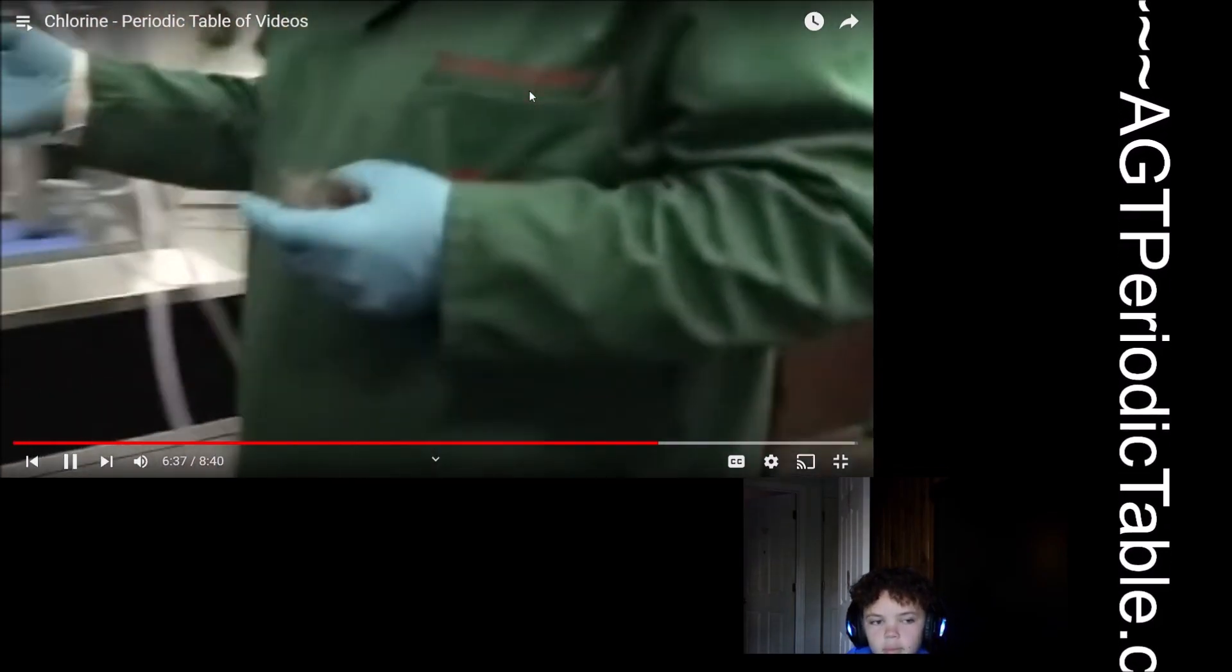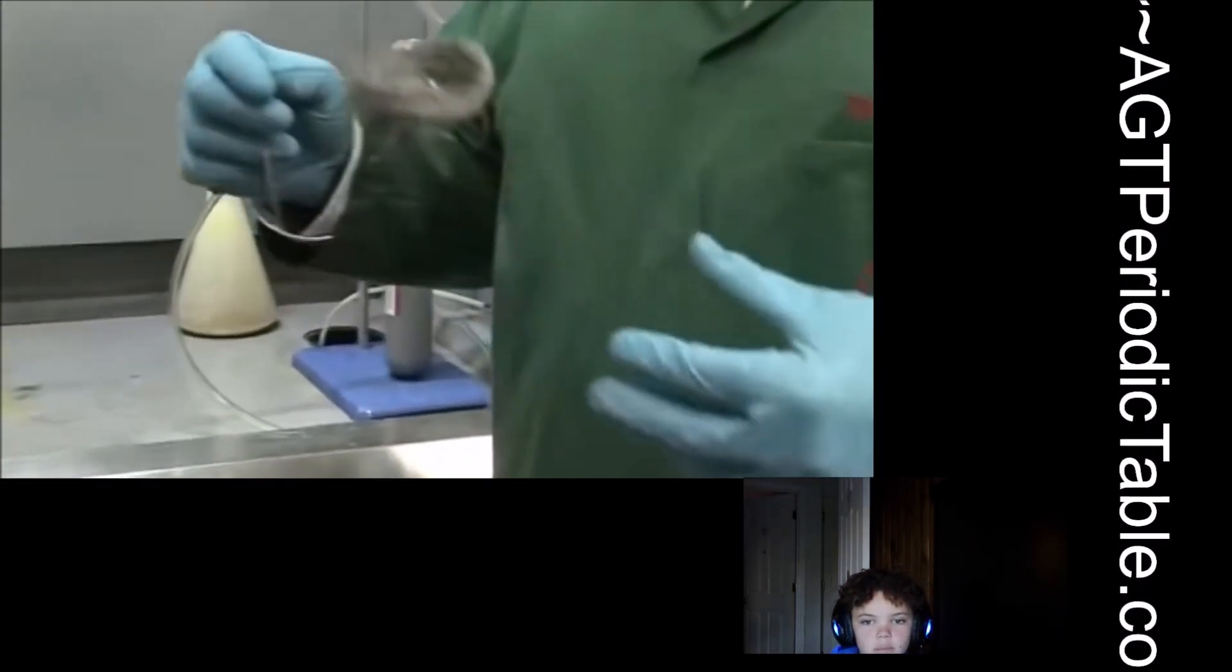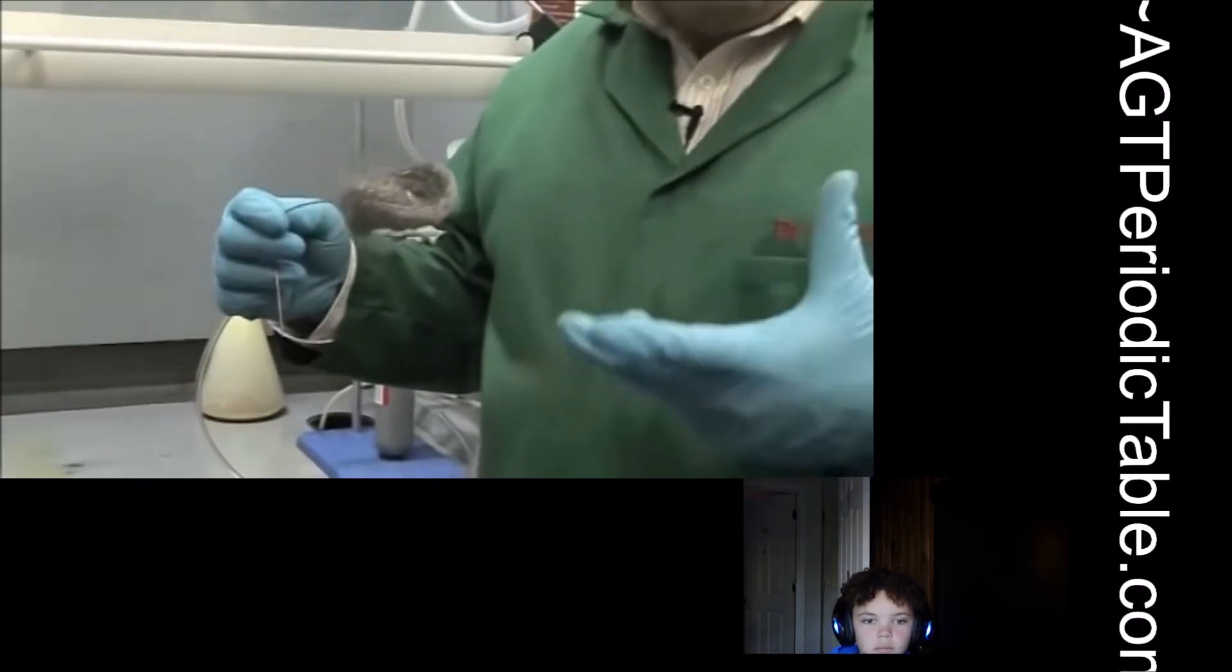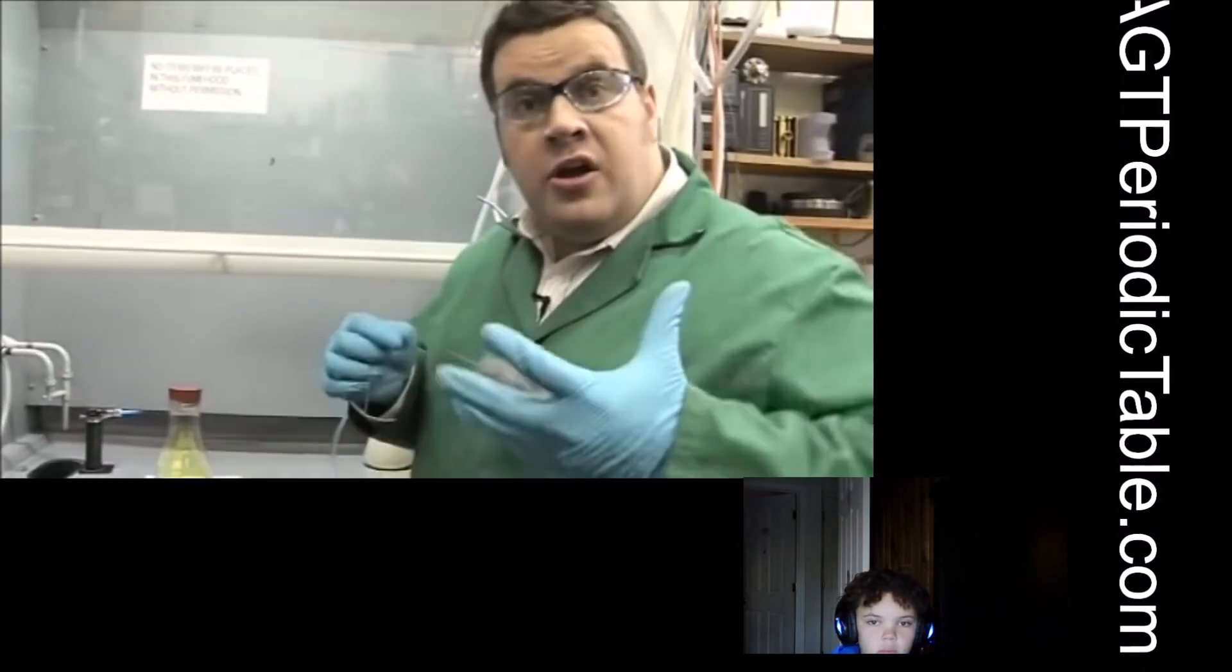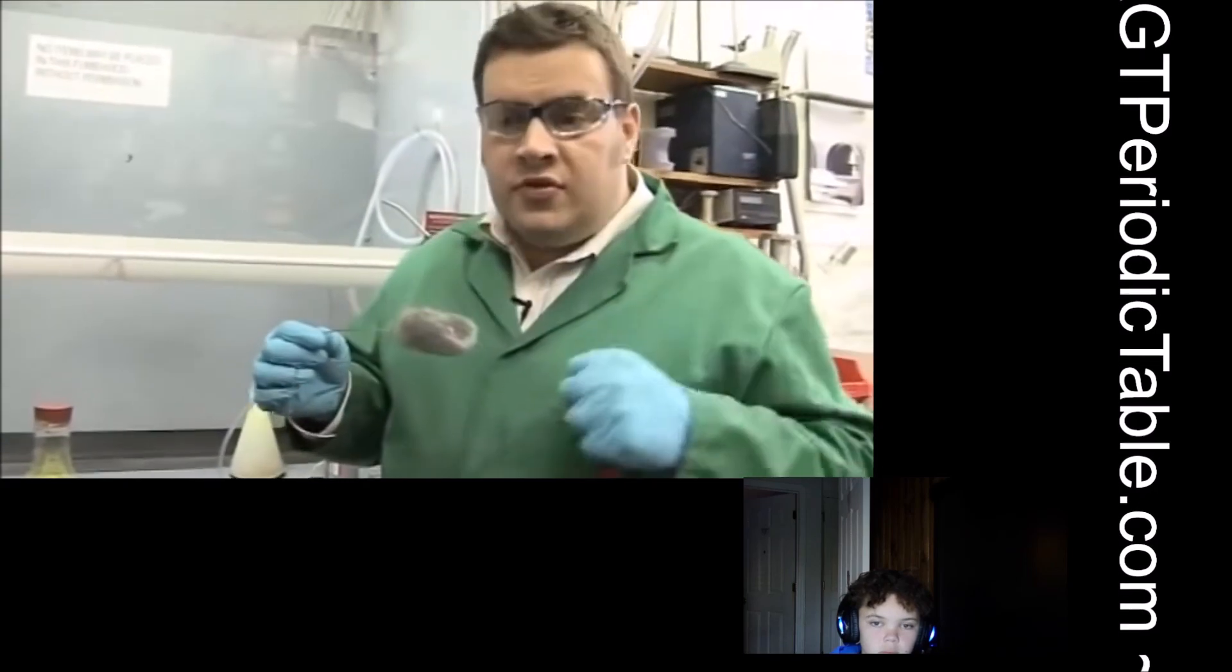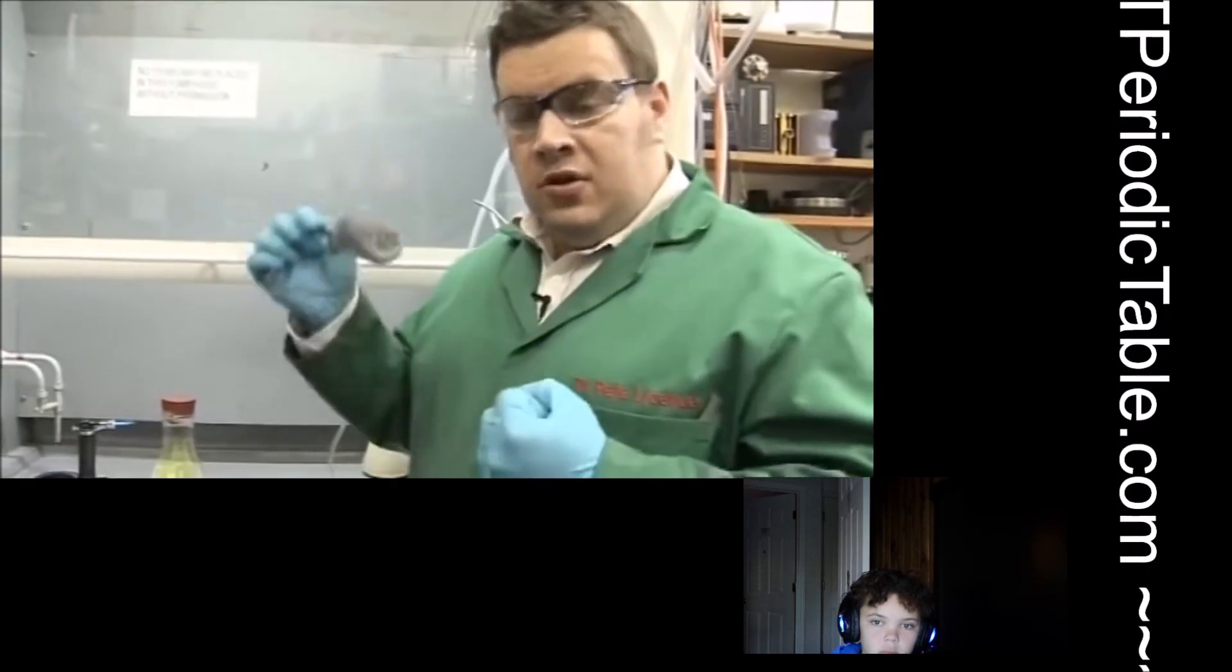So we've got some chlorine in this flask and you can see the nice yellow colour. And I thought what we'd try and do now is do a competition reaction again or a reaction with iron. So now the iron, we're going to heat the iron. This is iron wool, which you might use for treating wood. And we're going to heat that till it's warm and put it in the chlorine. The chlorine will oxidise it to iron chloride.